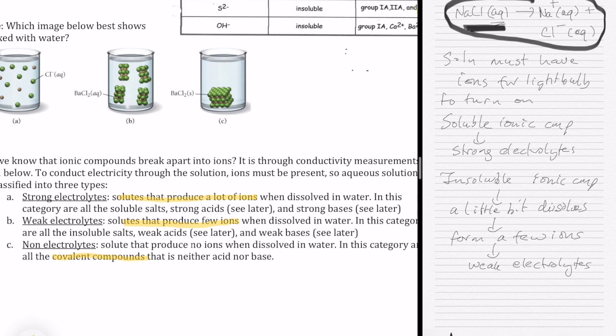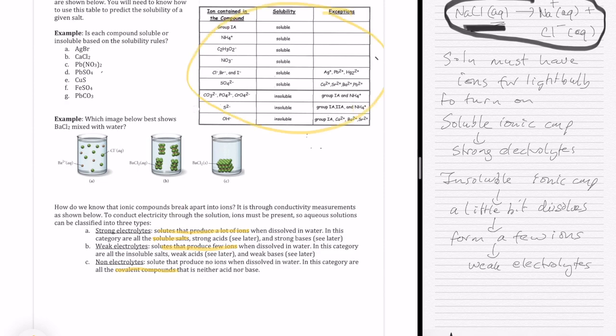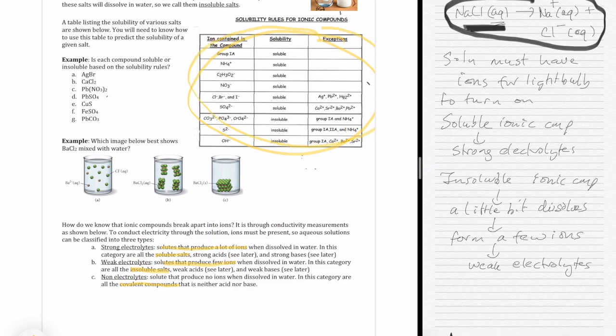The strong electrolytes are the ones that produce a lot of ions. Weak electrolytes are the ones that produce a few ions. Right now, we only talk about something called soluble salts, which is the ionic compounds that are shown to be soluble in that solubility rules. And then for the weak electrolytes, we only talk about something called insoluble salts, which are basically things that are insoluble based on this table.